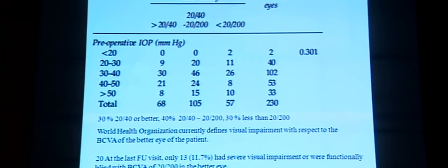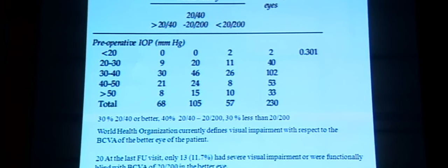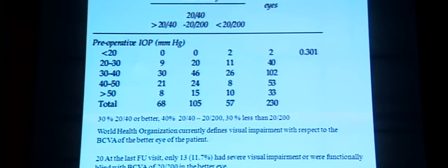Visual acuity is an important criterion. Anderson had earlier said that children with congenital glaucoma could be placed in a blind institution by adolescence. Our study shows that less than 30% of patients had a vision of less than 20/200, and using current WHO criteria, only about 12% had severe visual impairment and were functionally blind — demonstrating the long-term benefit of the combined procedure.